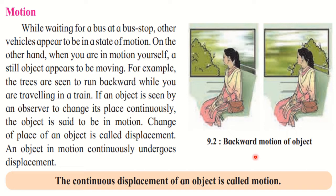Observe this picture: a lady is sitting in a train looking outside the window. The train is moving forward, and what she sees is the trees moving in the backward direction. The lady is stationary inside the train; the train is moving. Because of that, she can feel that the trees are moving backwards. But the trees are actually fixed — it is the train's movement that creates this feeling.